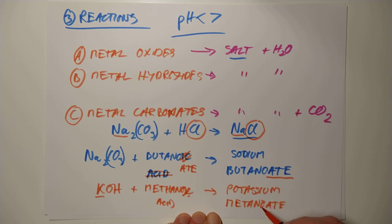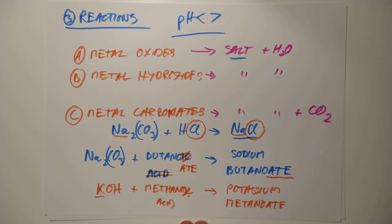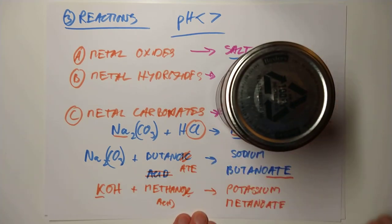Fun fact before we go: the stuff inside reusable hand warmers is actually a salt of a carboxylic acid - it's sodium ethanoate at incredibly high concentration. It's basically the same stuff they put on cheap salt and vinegar crisps, because sodium ethanoate gives you a salty taste and a vinegary taste, being the ion from ethanoic acid which is found in vinegar. And I think that's us done for today. Thank you for listening, bye-bye.